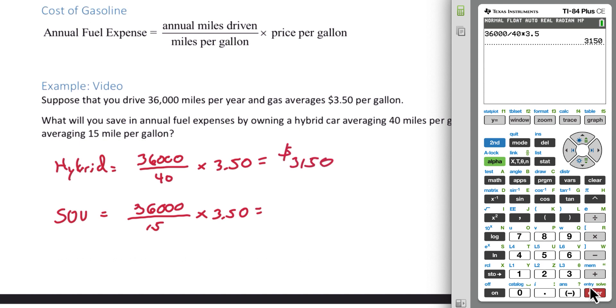For the SUV, we have 36,000 divided by 15 times $3.50, giving us $8,400.